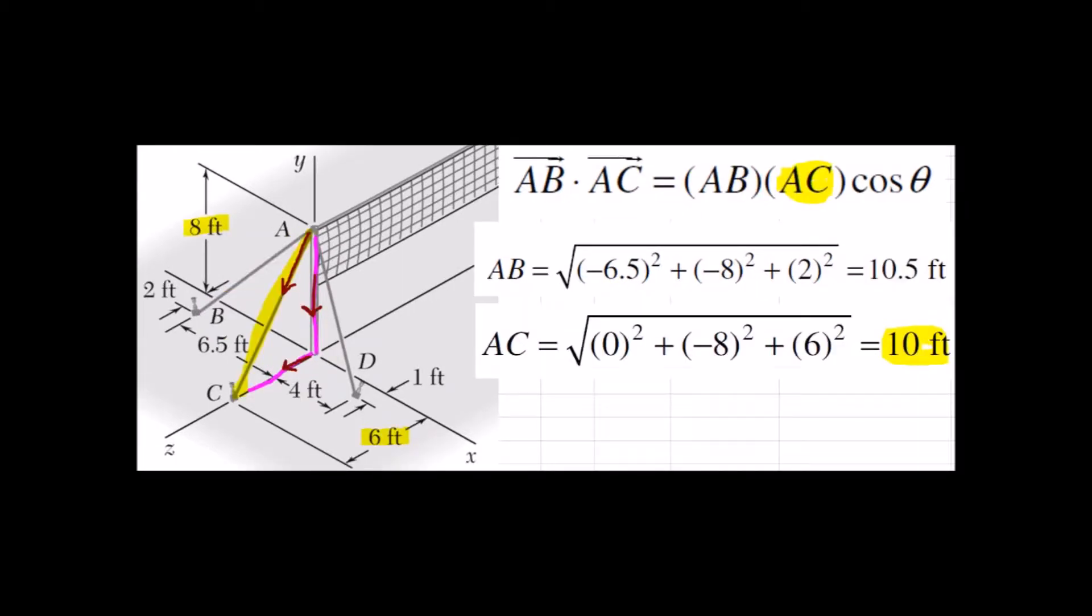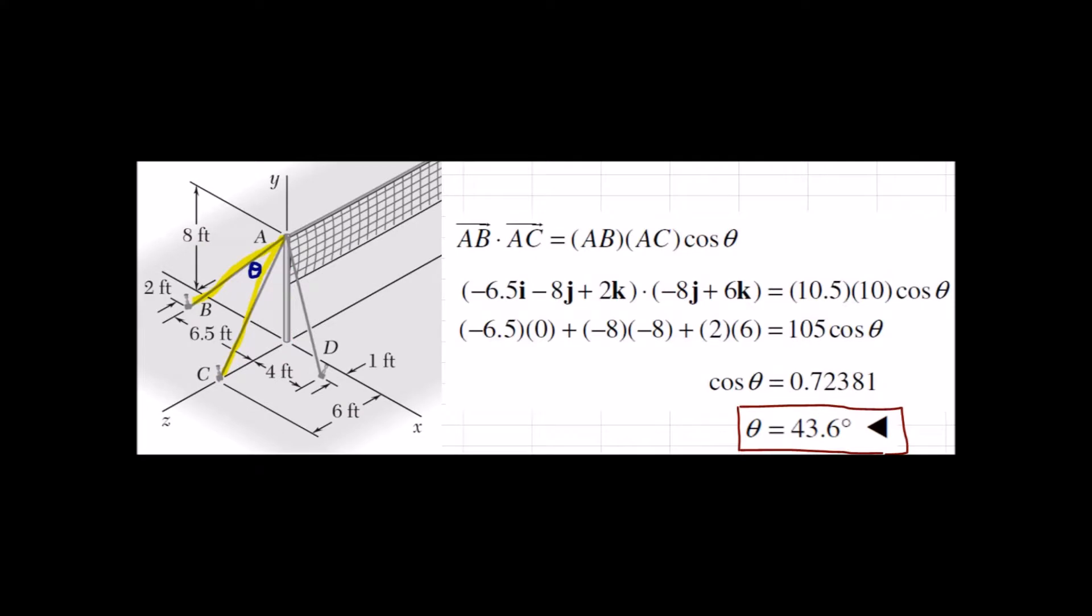So once we have the length of each of these cables, that's going to be the right-hand side of this equation, and that's all we need and we can solve for the angle just using the arc cosine of the dot product and the magnitudes. So we're just looking at the dot product in the numerator divided by the magnitudes in the denominator and that's the cosine.